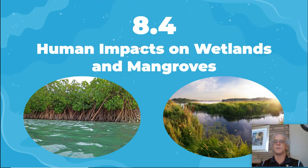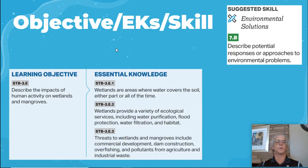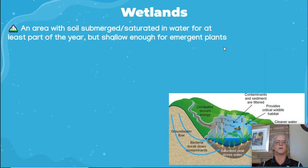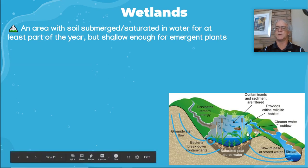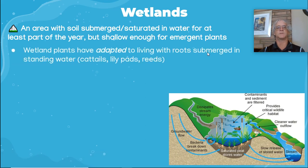Now, 8.4 — what are some of the human impacts on wetlands and mangroves? We're going to be looking at describing the impacts of human activities on wetlands. Wetlands are an area with submerged or saturated water for at least part of the year, but shallow enough for emerging plants. You can see here the cattails — they have roots submerged but go up above because it's shallow. Wetland plants have adapted with roots submerged in standing water, with part of the plant going above the surface to get plenty of sunlight.